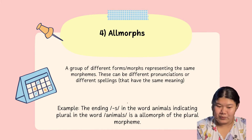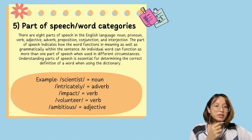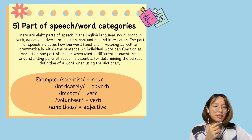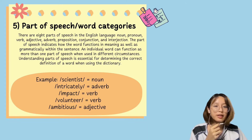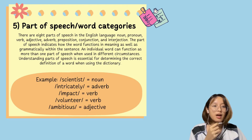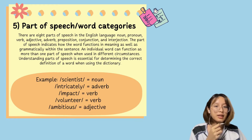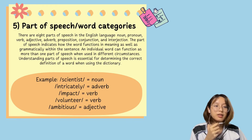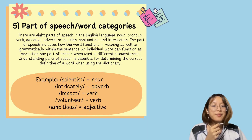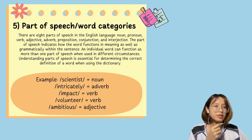Part of speech, or word category. There are eight parts of speech in the English language: noun, pronoun, verb, adjective, adverb, preposition, conjunction, and interjection. The parts of speech indicate how the word functions in meaning as well as grammatically within a sentence.